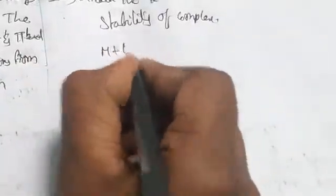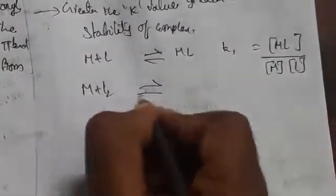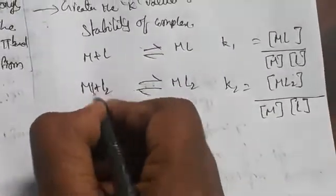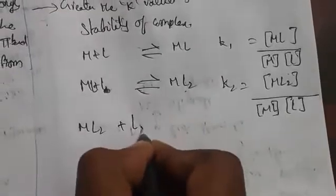We can take stepwise stability constants. For M + L → ML, K1 = [ML] / [M][L]. For ML + L → ML2, K2 = [ML2] / [ML][L]. For ML2 + L → ML3, K3 = [ML3] / [ML2][L]. For ML3 + L → ML4, K4 = [ML4] / [ML3][L]. These K1, K2, K3, K4 are called stepwise stability constants.